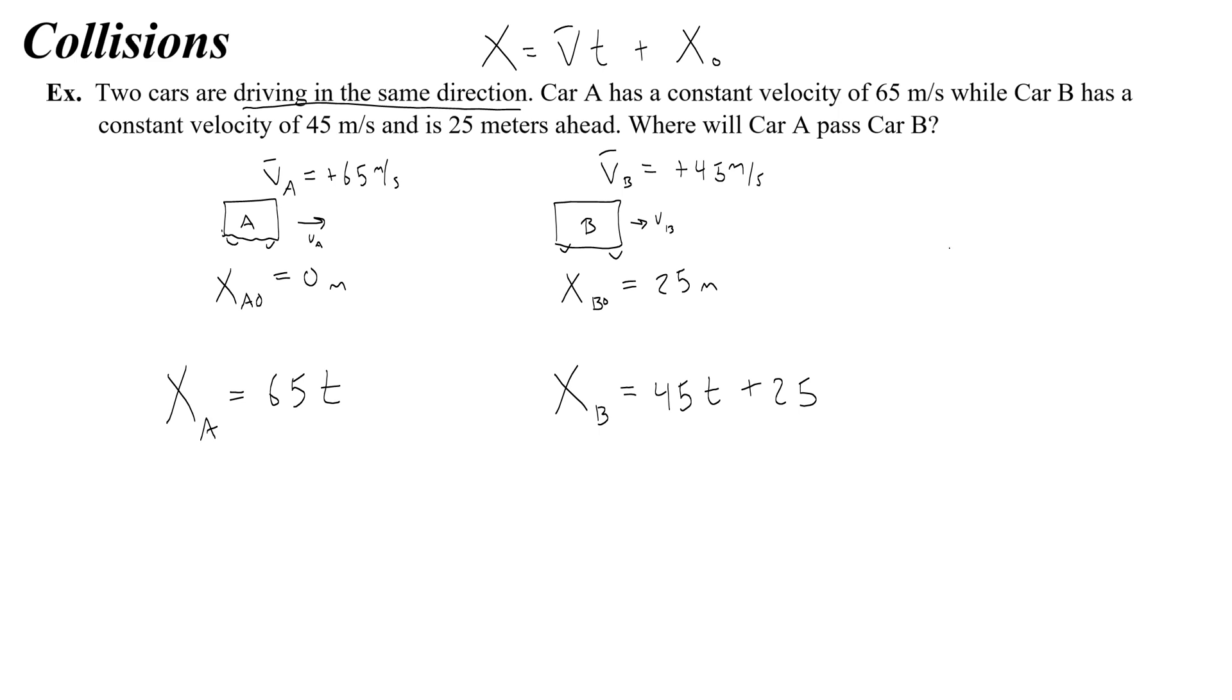So with these two equations, I can graph them. In fact, I can just do like a rough graph in my head, position, time. I know car A starts at 0, and would have a really steep slope of 65. That's a position function of A. And car B starts at 25, and then has a less steep slope of 45. So without graphing paper, I don't necessarily know where this intersection occurs at, but I know if I can find it, I will find when and where car A passes car B.